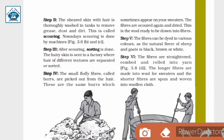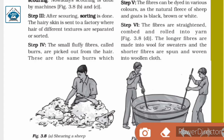Step 2: The sheared skin with hair is thoroughly washed in tanks to remove grease, dust, and dirt. This is called scouring. Nowadays scouring is done by machines.